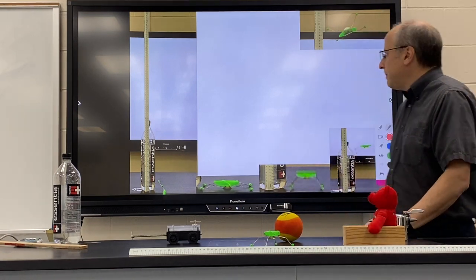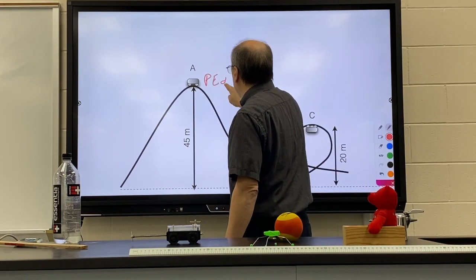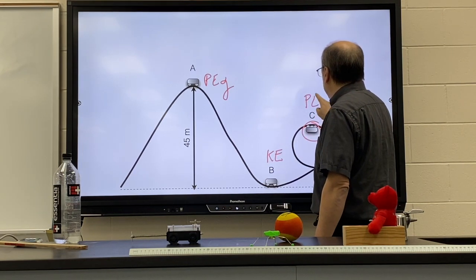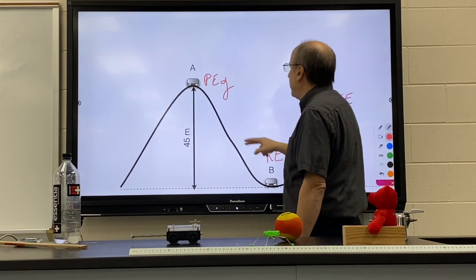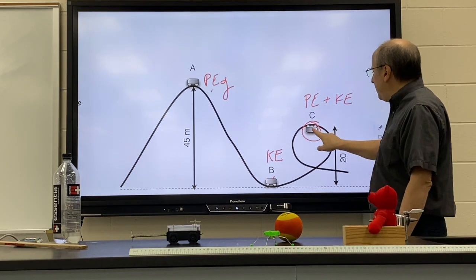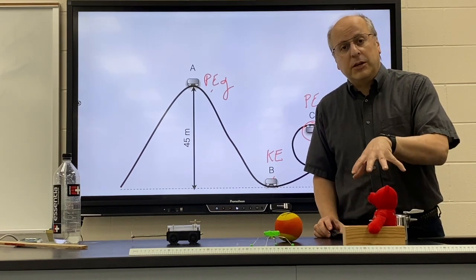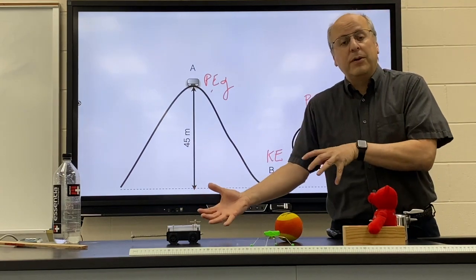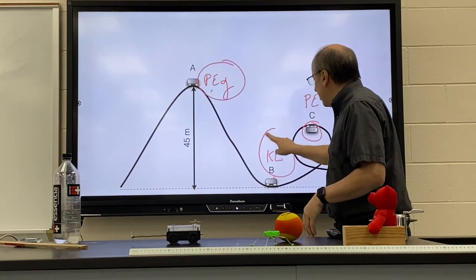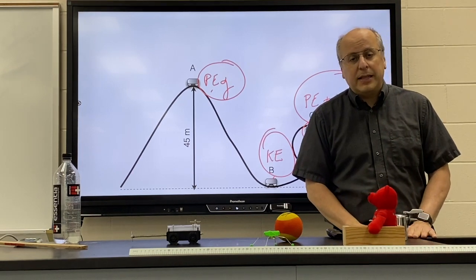With the roller coaster, you can see that at the top it's gravitational potential energy, which turns into kinetic energy at the bottom. At an intermediate point, it has a mixture of potential and kinetic. The key idea is: you want to be able to identify what types of energy are present, what they're turning into, and what they used to be. The key principle is that total energy equals total energy — energy is conserved. We'll show how to use this mathematically in our next lesson.